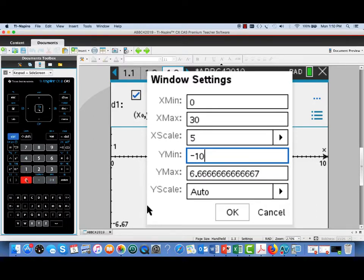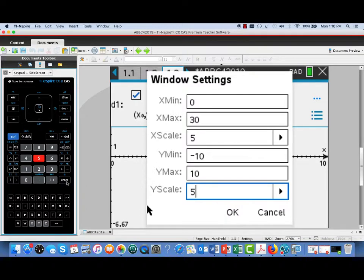So, I'll set y min to negative ten, and I'll set y max to positive ten. And I'll also use a scaling of five. OK. I think we're set to go there. So, we'll press OK.